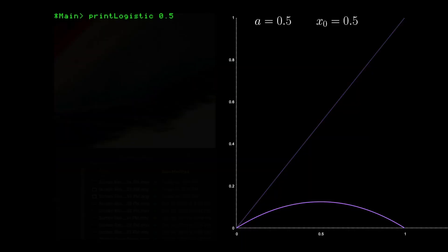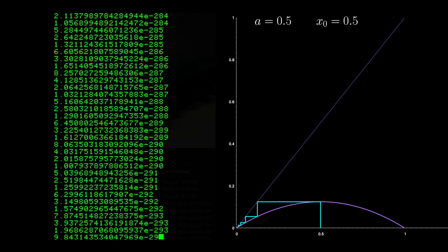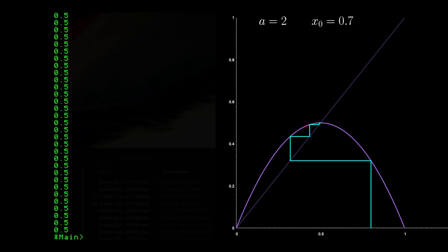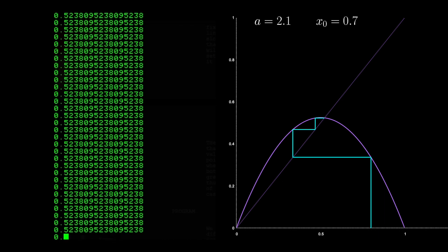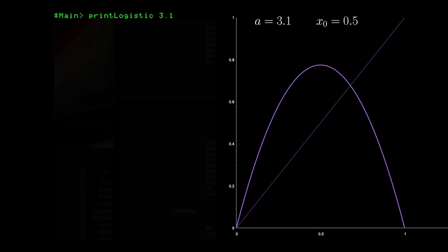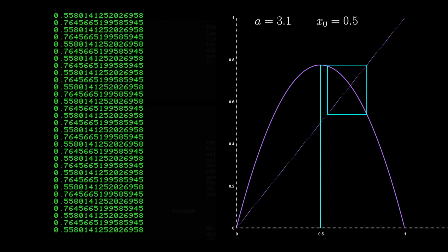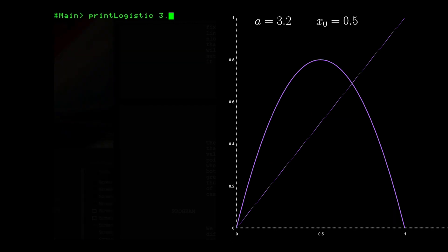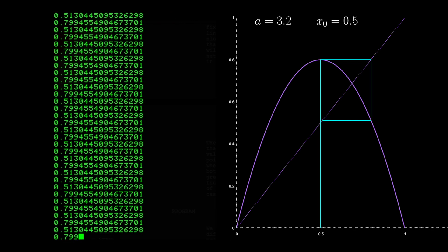For values of A less than 1, like 0.5, we see that it converges to 0. When A is 2, it converges to 1.5, and for 2.1, another non-zero fixed point. Now let's try 3.1, where both fixed points are repelling. We see that instead of landing on a single value, it settles into an alternating pattern with two values. We see this again for 3.2.